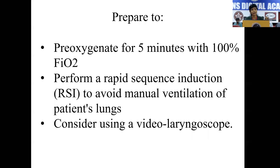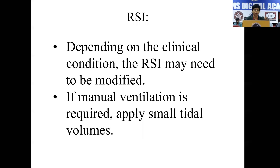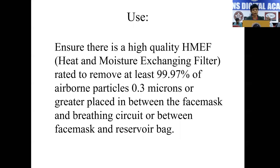Pre-oxygenation to achieve at least more than 95% saturation. Rapid sequence induction. Always try to use the video laryngoscope whenever possible so that the distance is maintained and you will be able to visualize the cords. If not, use a bougie or a stilette in the endotracheal tube. Modify the approach according to patient requirement. If at all we need to do manual ventilation, then only small tidal volume should be used. Ensure high heat and moisture exchange filter between the breathing circuit and the face mask and reservoir bag.